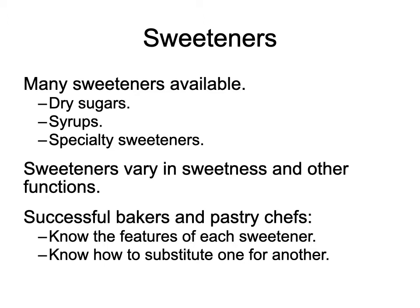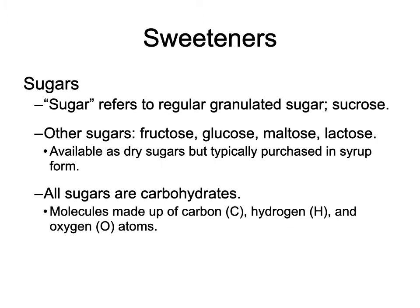We need to understand the features of each sweetener and how to substitute one for another — partly because if we run out of something it's good to be able to substitute, but also to make intentional alterations to recipes. 'Sugar' generally refers to granulated sucrose — what we think of as table sugar. Other sugars like fructose, glucose, maltose, and lactose are all different sugars, available as dry crystalline sugars but typically purchased in syrup form.